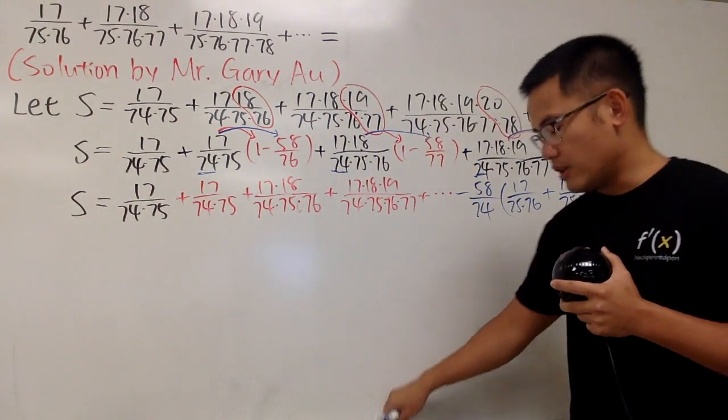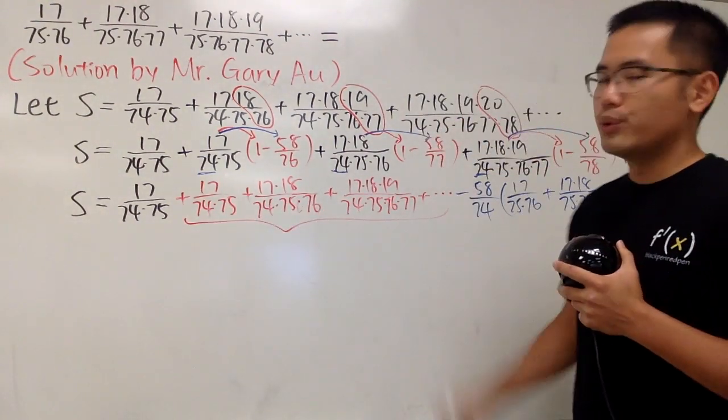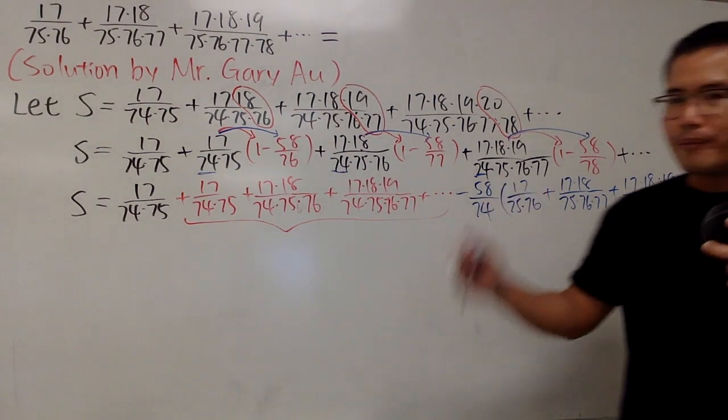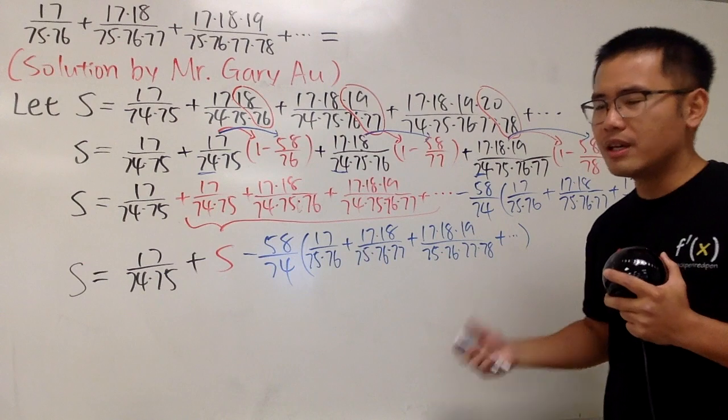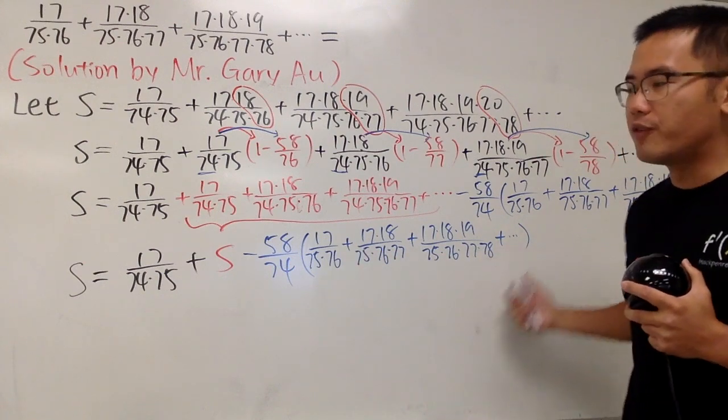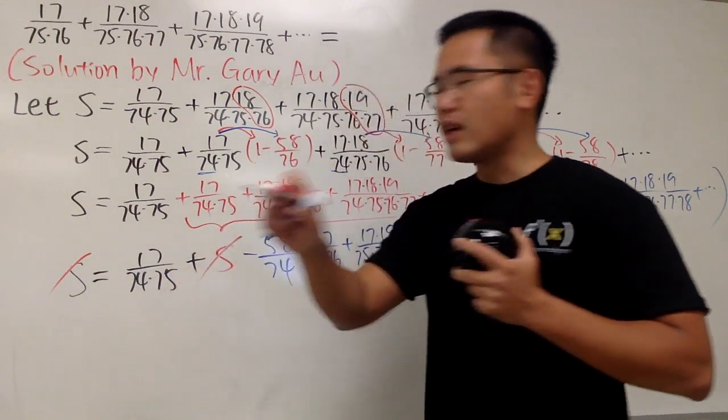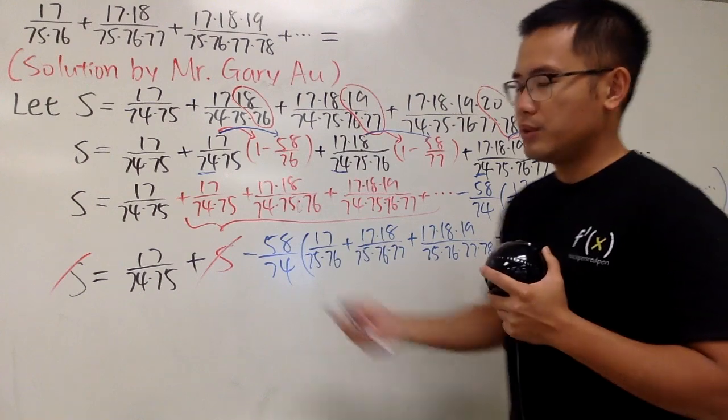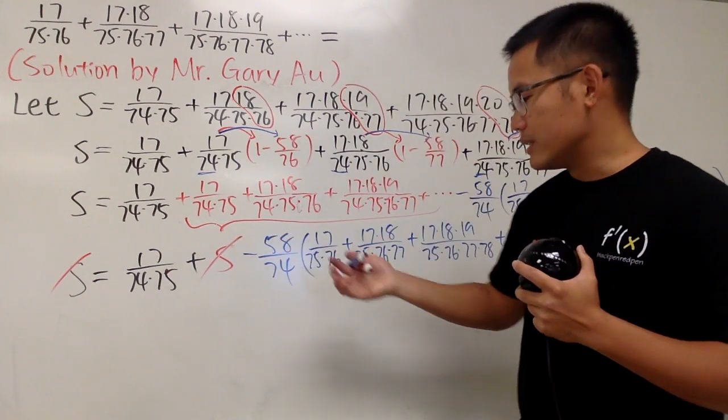Why? Because, don't forget we're still trying to solve the original question. When you don't have the 74 in this parentheses right here, you will see the beauty. Anyway, we will have 58 over 74. And then we just continue. We take this times that. We will have the 17 left on the top only, over 75 times 76. And then we continue. Now, here is the deal. Of course, all this right here is just equal to S. And this is exactly what we're trying to find.